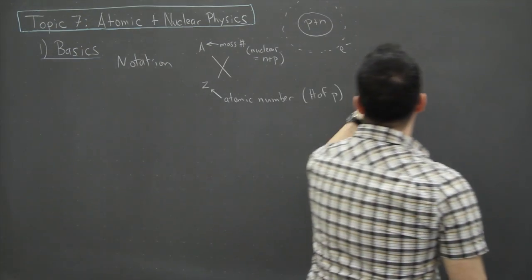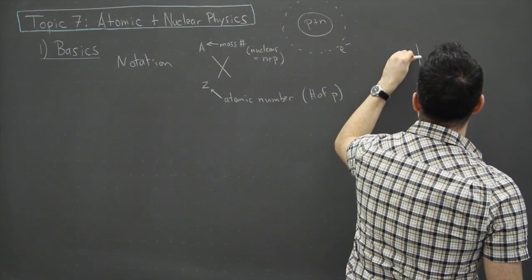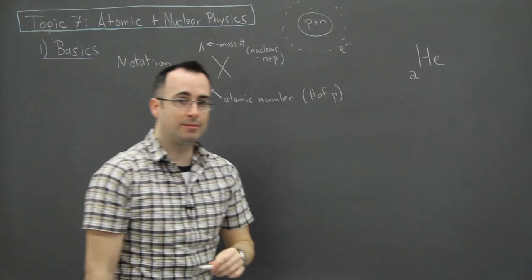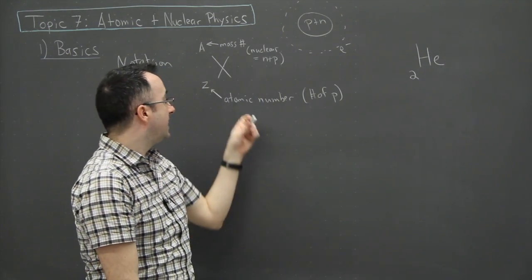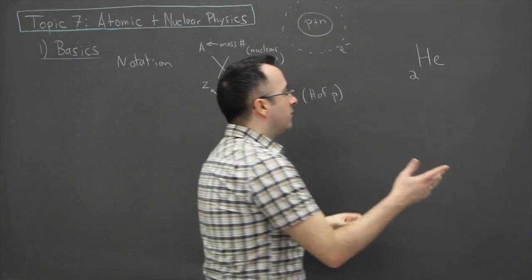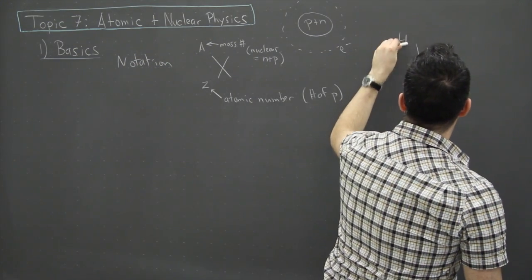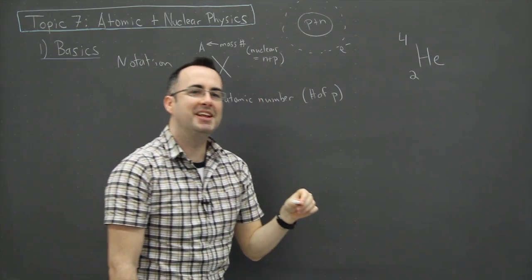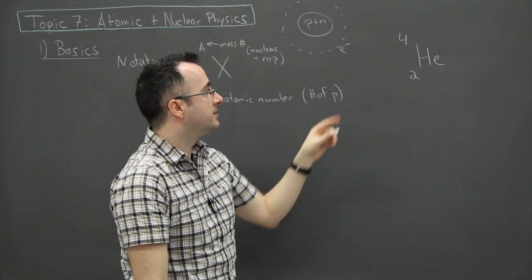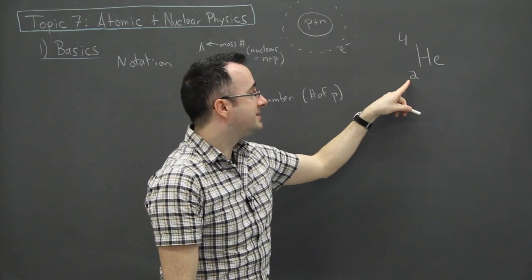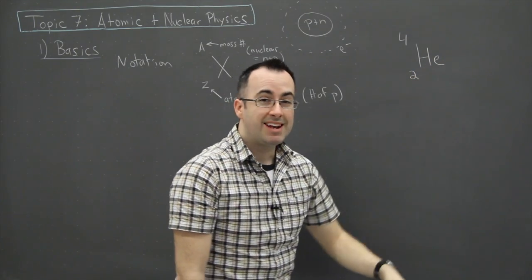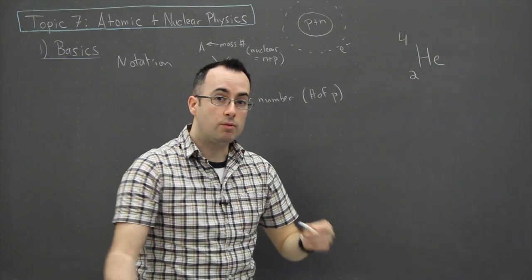Let me give you a quick little example of what one of these could be. So let's say it's helium. Well helium is the second element in the periodic table, so we say it has an atomic number of two. Instead of doing that, let's just take a look at this helium here. So helium, it's the second element in the periodic table, and so we write helium.